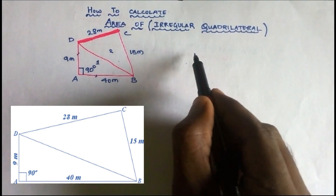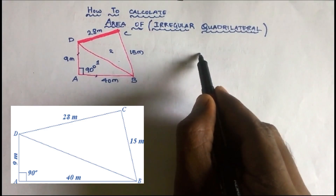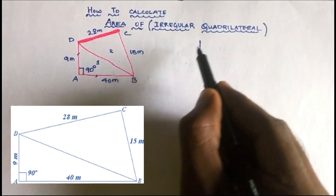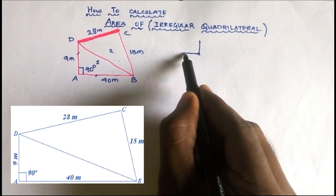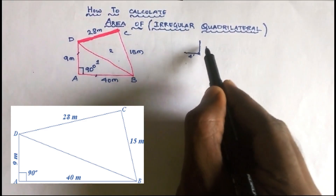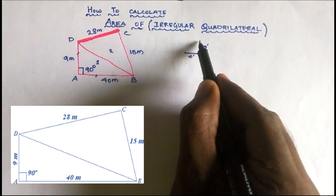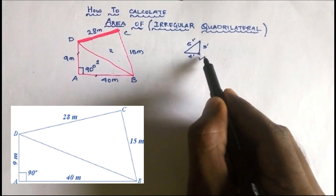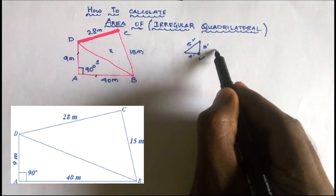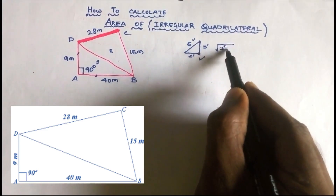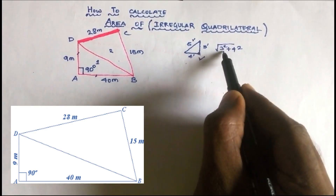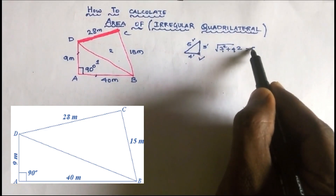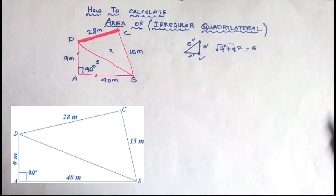If you want to make a line straight, and make a point, that point uses 3 feet and 4 feet. If you want to make a diagonal, it's correct. So here we have 3 squared plus 4 squared: 3 squared is 9 and 4 squared is 16.